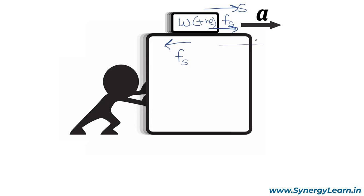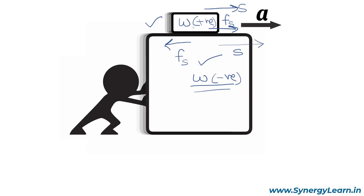So positive work is done on the upper block. The same observer sees the lower block also moving in the forward direction, but the static friction on it acts backward, so the work done by this static friction on the lower block is negative. Note that static friction can do positive as well as negative work. The force and displacement magnitudes are the same; the only difference is that they act in opposite directions. So the energy extracted from the bigger block by negative work is completely transferred to the upper block — friction extracts energy from one block and supplies it to the other. This is how work done by kinetic or static friction can be negative, positive, or zero.